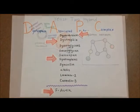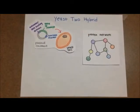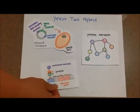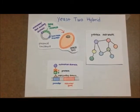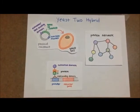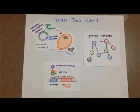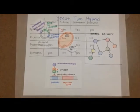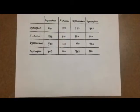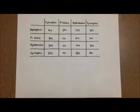In the yeast two-hybrid experiment, if two proteins physically interact they will initiate transcription of a reporter gene. The reporter gene codes for a protein which allows yeast to survive on media which lack a specific nutrient. The yeast two-hybrid experiment performed yielded these results.